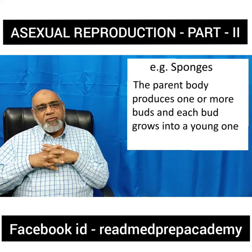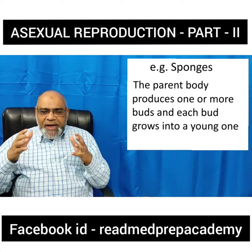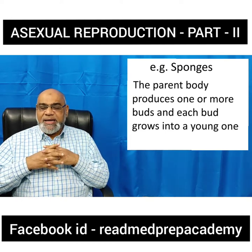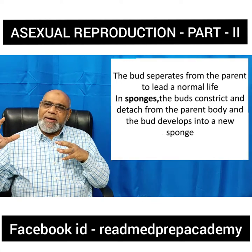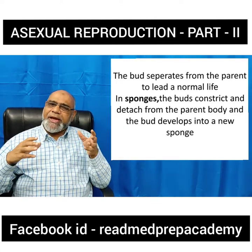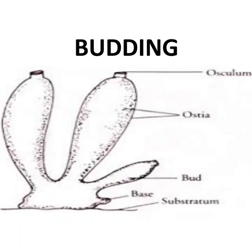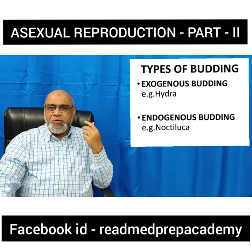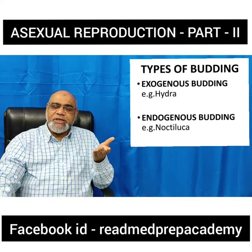Now let us move on to Budding. What is budding? Budding is seen in animals like sponges. The parent body produces a small projection called buds. These buds slowly develop and are separated from the parent body. When they are released separately, they develop tentacles and become a new organism. There are two types of budding: one is called exogenous budding, seen in hydra, and the other is endogenous budding, seen in noctiluca.